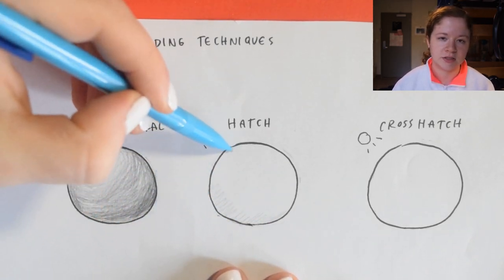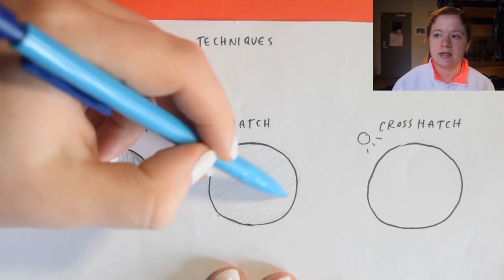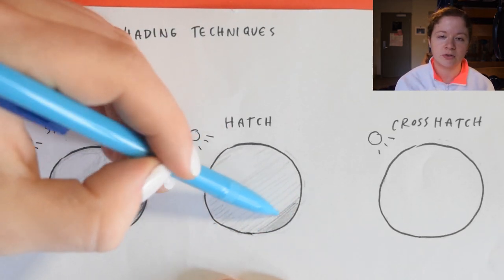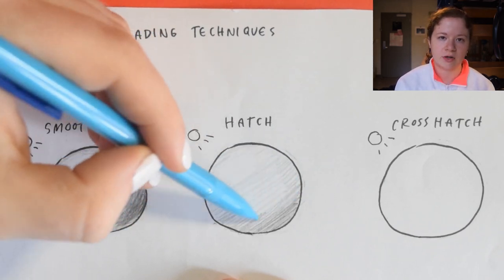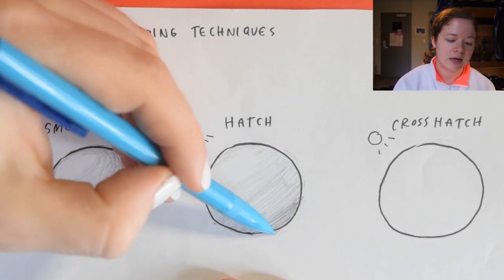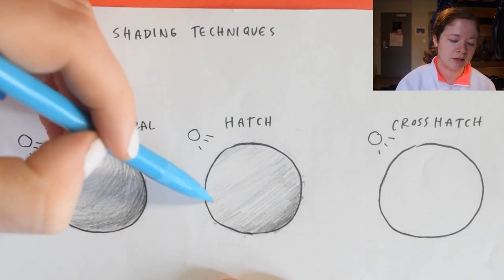The next one is called the hatch. This is the one that I probably use the most often. It's putting lines in a consecutive order parallel to each other. They don't overlap at all. The closer they are and the more of them there are, the darker the area is. And as you put them farther apart or put less of them, the lighter the area is.